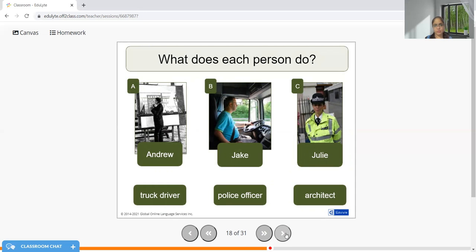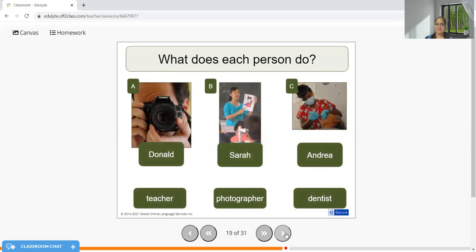We also have other professions like engineer - he is an engineer, she is an architect. Remember, whenever you need to use 'a' and 'an', you need to be super careful. Donald is a photographer, Sarah is a teacher, Andrea is a dentist. No vowel, so we did not have to use 'an' here.